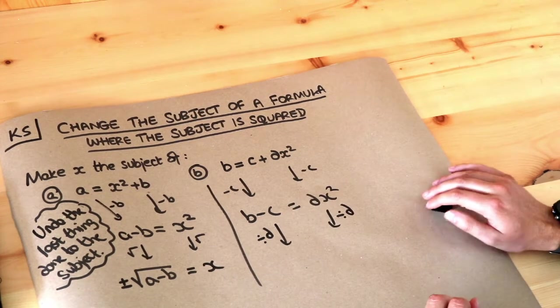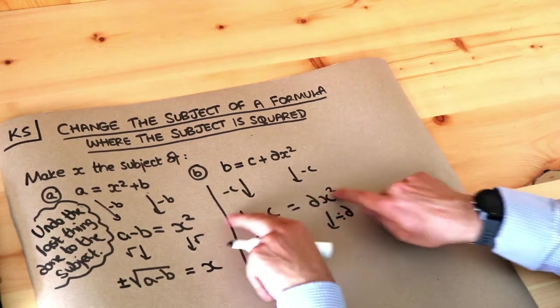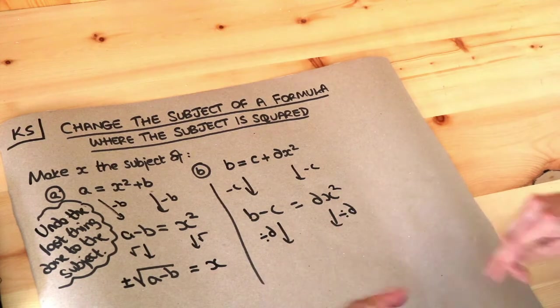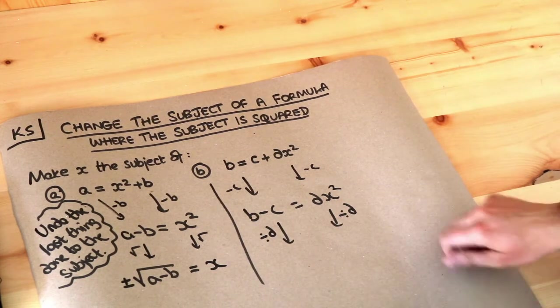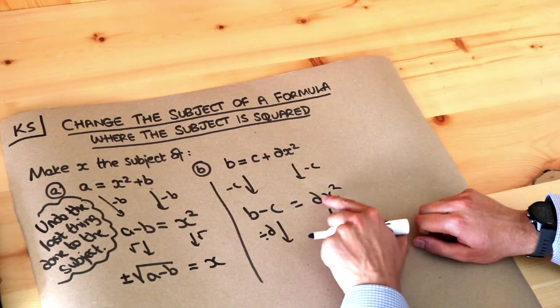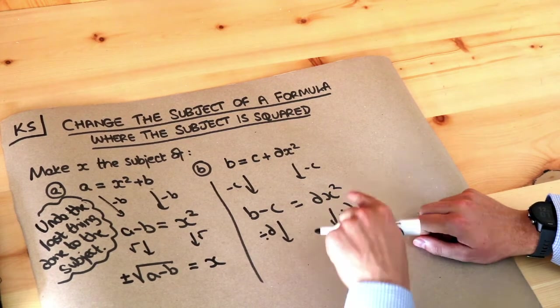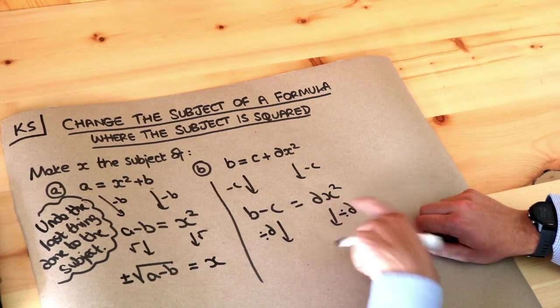A common mistake students would make at this point is that they would square root both sides because they see the square there and think oh I've got to square root, but they don't think about the proper order. The x is being squared, then it's being multiplied by d. It's d lots of x squared. The squared is happening to the x first.